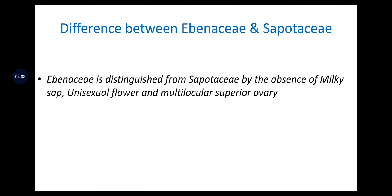Difference between Ebenaceae and Sapotaceae: Ebenaceae is distinguished from Sapotaceae by the absence of milky sap, unisexual flowers, and multilocular superior ovary — because Ebenaceae and Sapotaceae belong to the same order — whereas Sapotaceae has milky sap, bisexual flowers, and multilocular superior ovary.